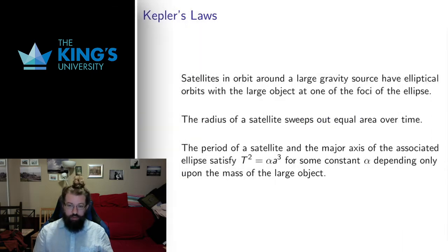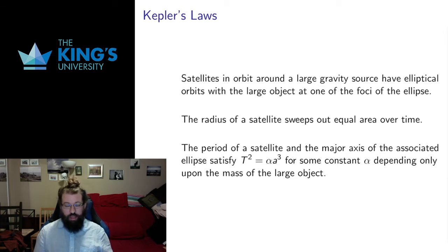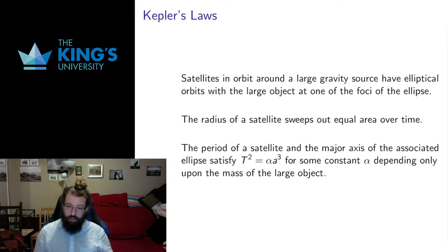Kepler's laws of orbital motion: satellites in orbit around a large gravity source have elliptical orbits, and the large fixed object is at one of the foci of the ellipse. The radius sweeps out equal area over equal time, and the period — the time it takes for one full revolution — and the major axis of the ellipse satisfy a relationship where the period squared is proportional to the major axis cubed, and the constant only depends on the mass of the central object.